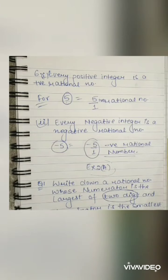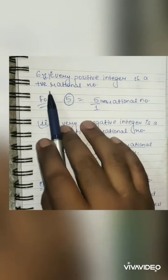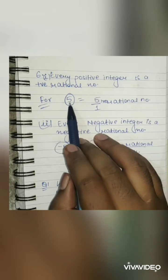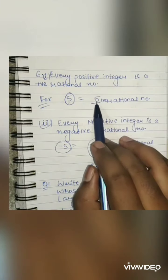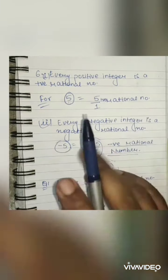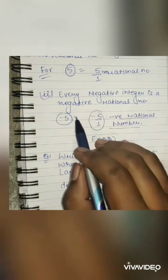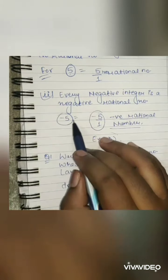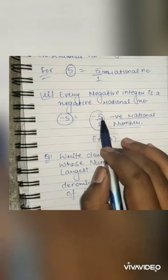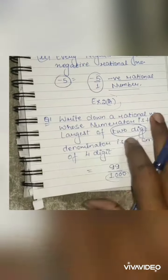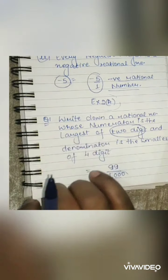Now the sixth point: every positive integer is a positive rational number when converted. For example, positive integer 5 becomes 5 by 1 as a rational number, so it is also a positive rational number. And every negative integer is a negative rational number when converted into rational form.